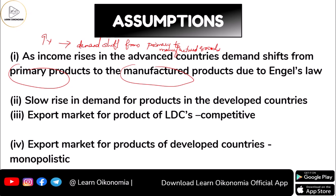There is a slow rise in demand for products in developed nations. This means there is slow growth in the export market for products of LDCs, which consist of primary goods. The export market for products of developed countries, which consists of manufactured goods, behaves very differently.